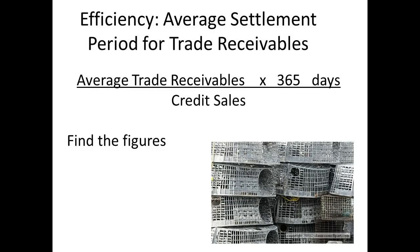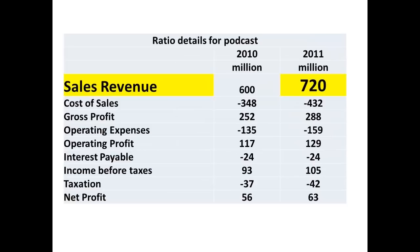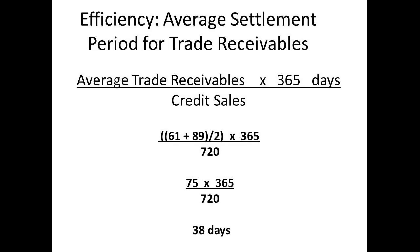The average settlement period for trade receivables tells us how long it is before a customer pays for goods purchased. It is measured by taking the average trade receivables, dividing by credit sales, then multiplying by 365 days. From the balance sheet: 2010 the figure is £61 million and 2011 the figure is £89 million. The credit sales figure — sales revenue of £720 million — comes from the income statement. The calculation: 61 plus 89 divided by 2, so 75 divided by 720 multiplied by 365, gives an answer of 38 days.